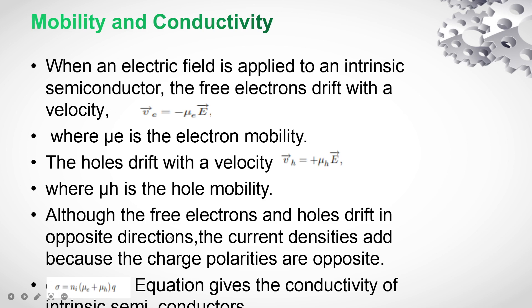Mobility and conductivity are the terms when an electric field is applied to an intrinsic semiconductor. The free electrons drift with velocity. The velocity with which they are moved is VE equals minus mu E times E, where mu E is the electron mobility. And same with the holes drift velocity, VH equals plus mu H times E, where mu H is the hole mobility.